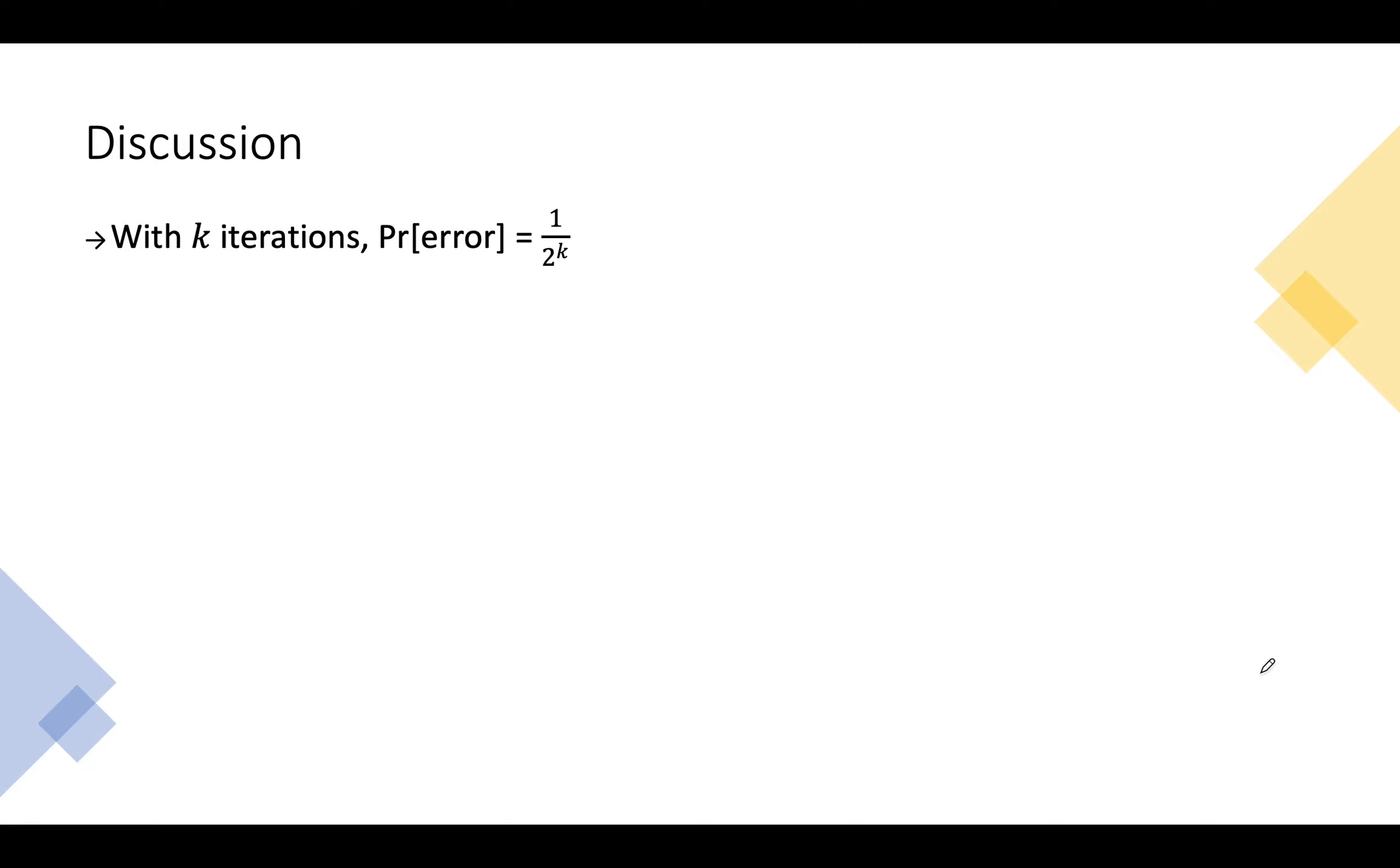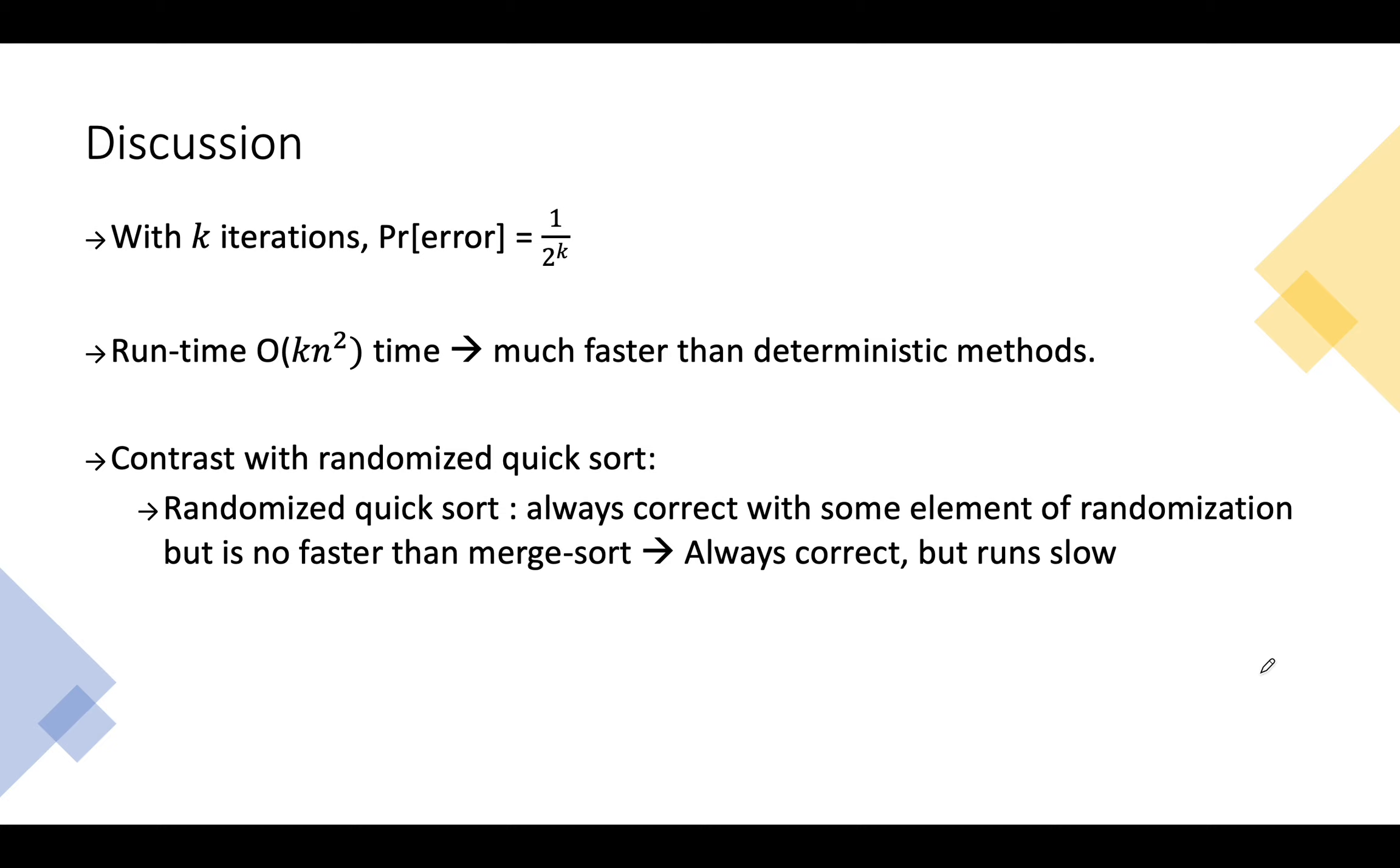We want to conclude this video with the following points. In general if we run the algorithm for k iterations the error rate reduces to one by two to the power k which is an extremely small value for a large enough k. We could see that this runs in order of kn squared time which is much faster than deterministic method. Another interesting point of mention is the contrast to randomized quick sort. Randomized quick sort even though it has an element of randomization is no faster than merge sort which runs in O of n log n. Randomized quick sort even though it's always correct but runs slow whereas Freivald's algorithm is always fast yet with a low error rate. This concludes our video about Freivald's algorithm where we saw how introducing randomness helps achieve a faster runtime with a low error rate.